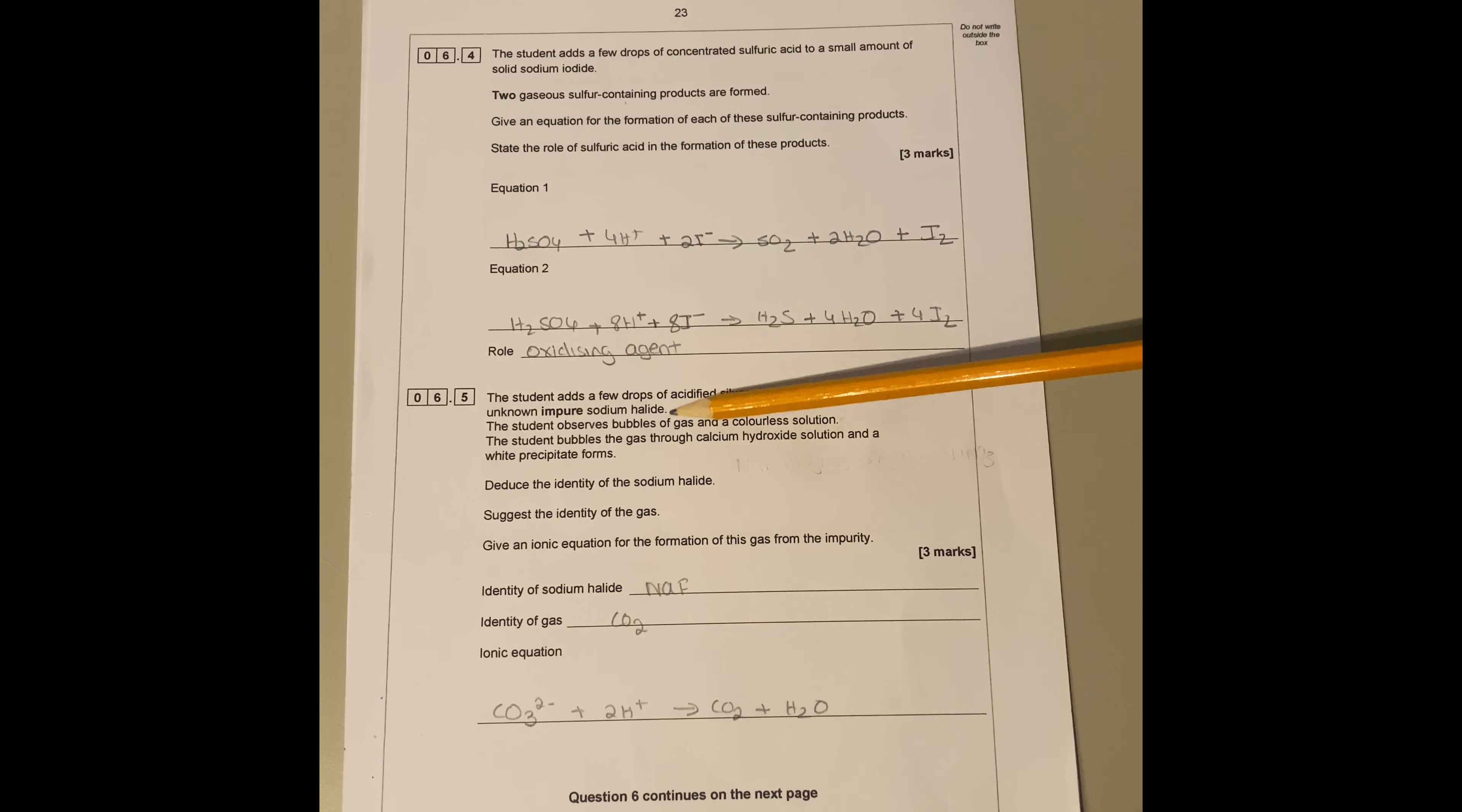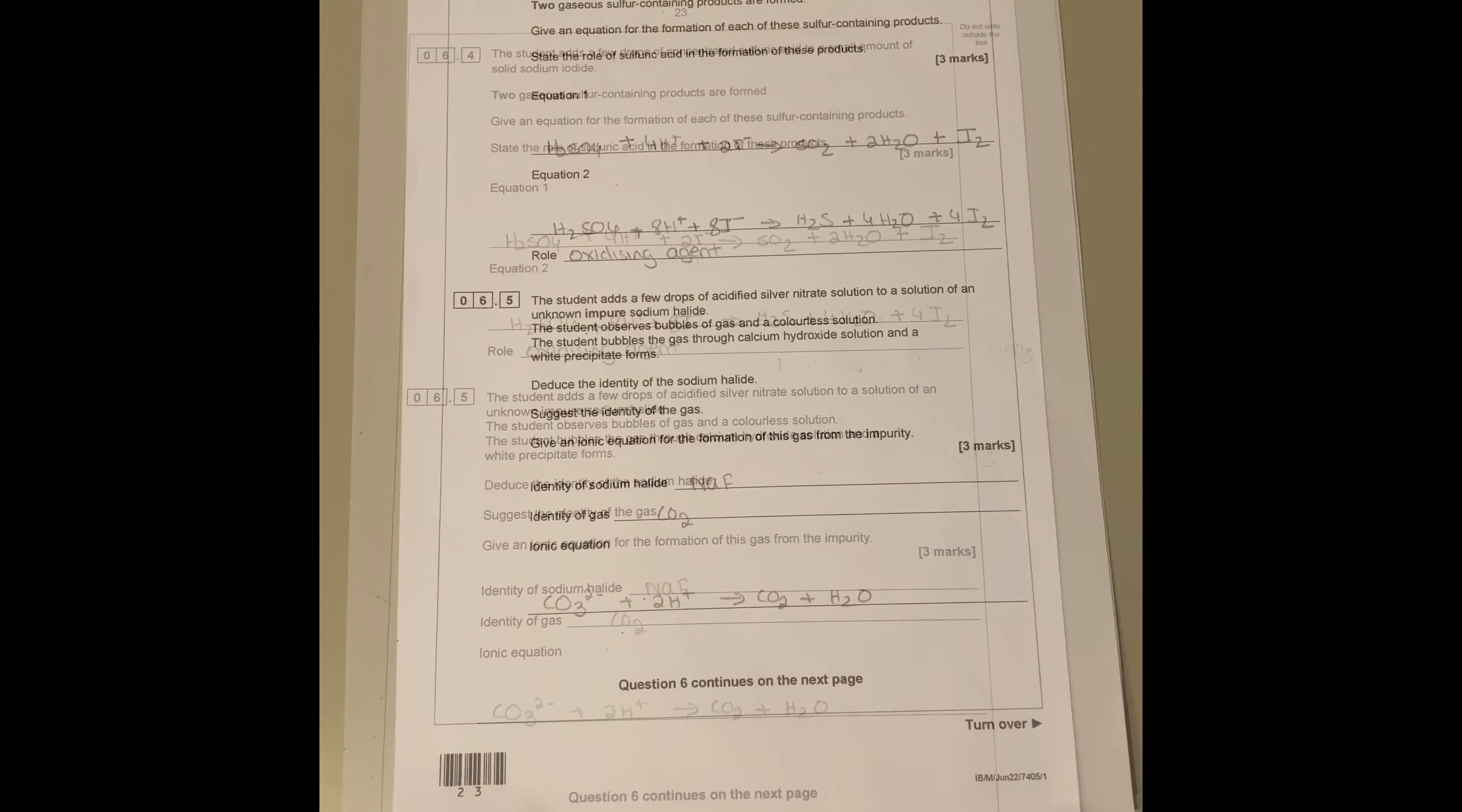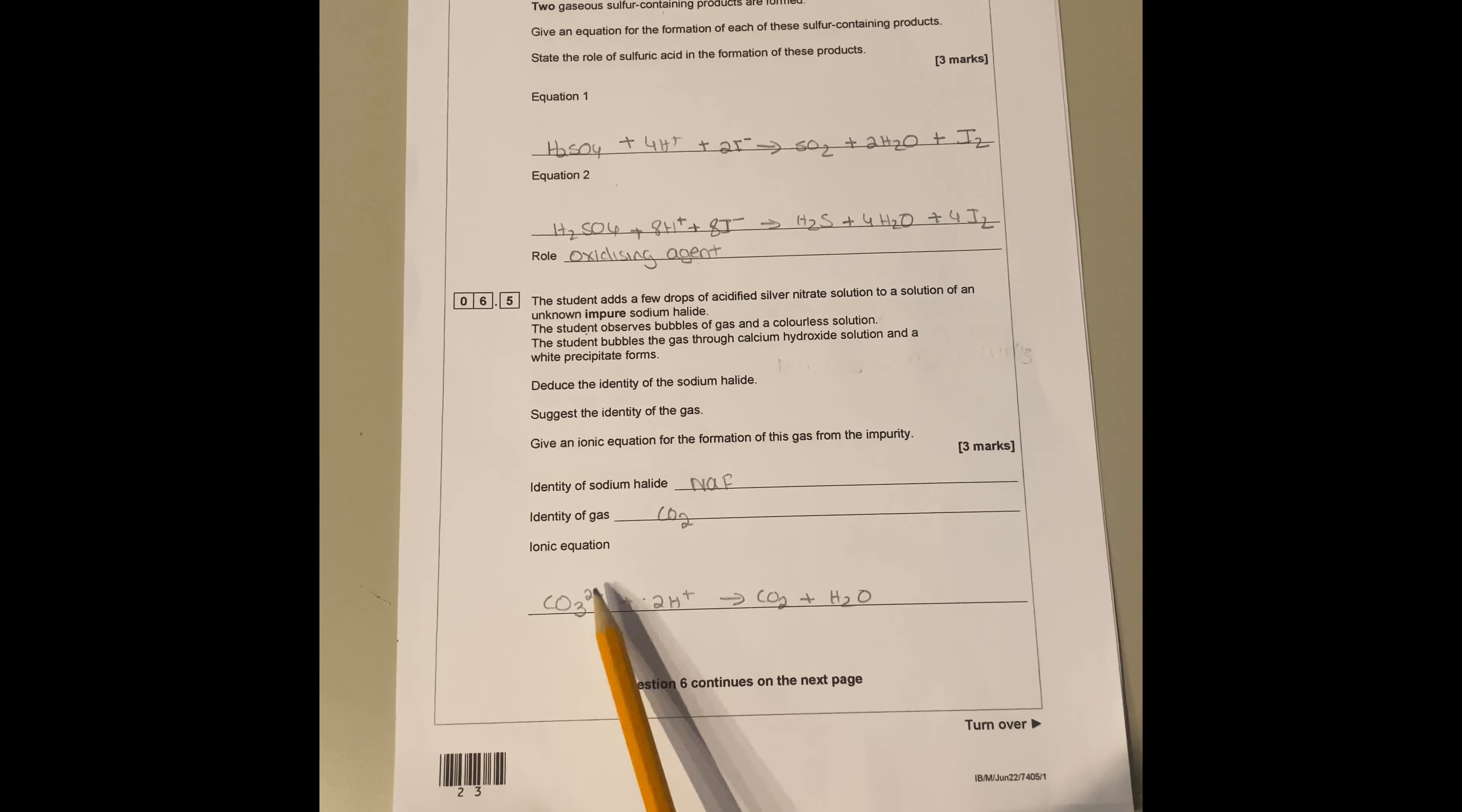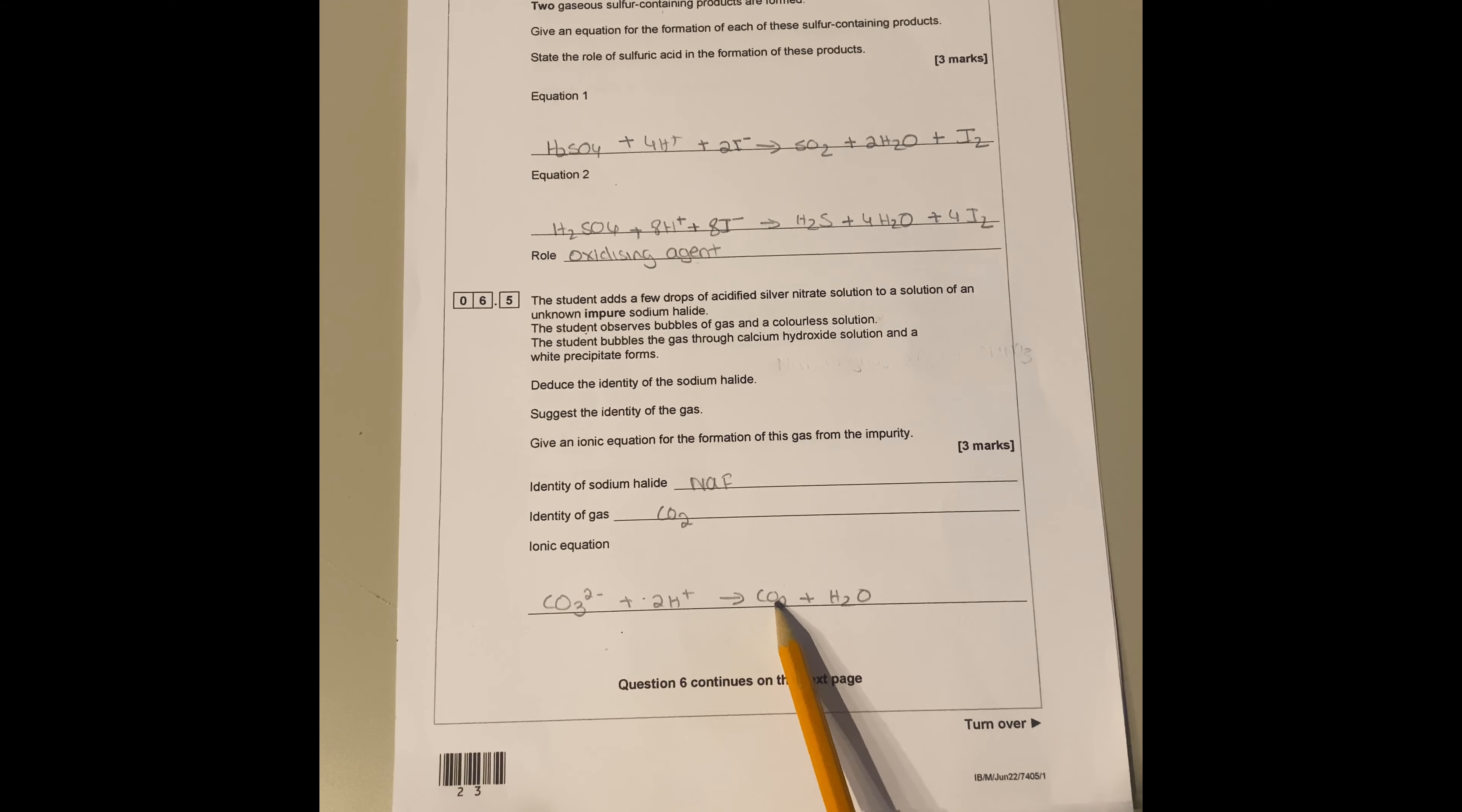Give the ionic equation for the formation of this gas from the impurity. You got carbonate plus two H plus gives you CO2 plus water. That's how you do this question. If you got carbonate to start with, it forms CO2, then you balance this equation by adding one water, so you got one water then you got three oxygens. Then you have two hydrogens there, because it's two minus plus two plus gives you zero. The equation is balanced, you don't have to add any electrons.